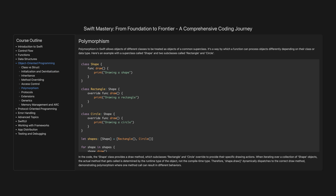Polymorphism. Polymorphism in Swift allows objects of different classes to be treated as objects of a common superclass. It's a way by which a function can process objects differently depending on their class or data type. Here's an example with a superclass called Shape and two subclasses Rectangle and Circle. The Shape class provides a draw method, which subclasses Rectangle and Circle override to provide their specific drawing actions. When iterating over a collection of Shape objects, the actual method that gets called is determined by the runtime type of the object, not the compile-time type, demonstrating polymorphism where one method call can result in different behaviours.